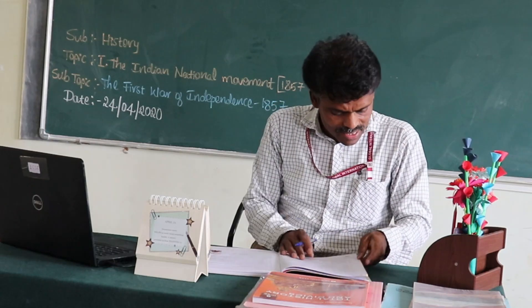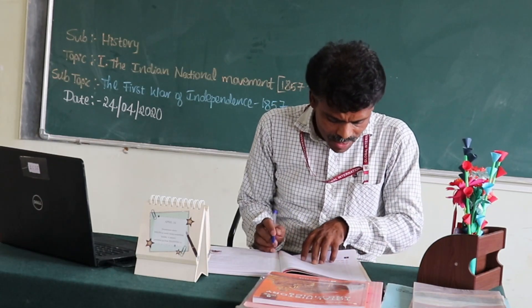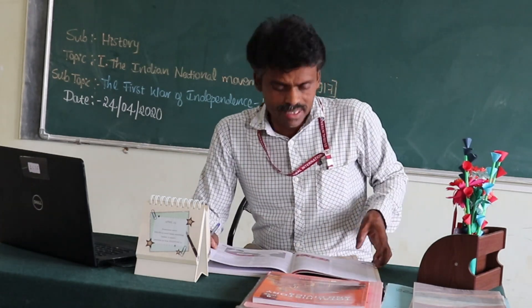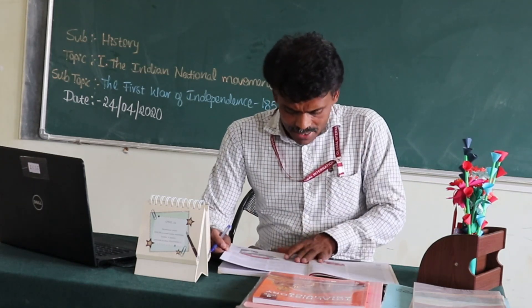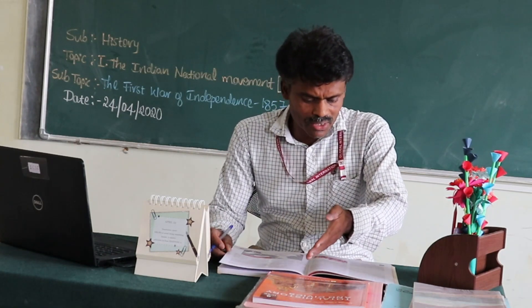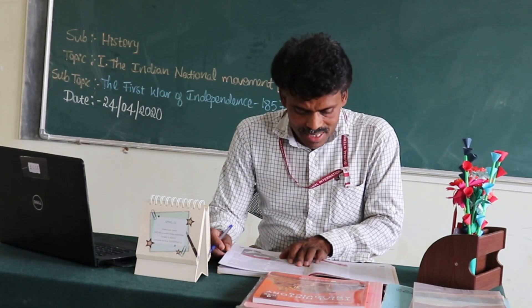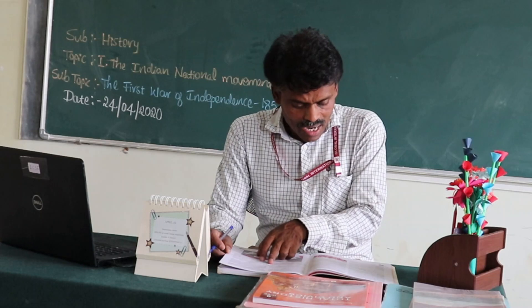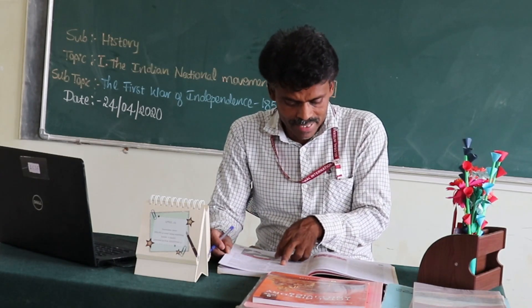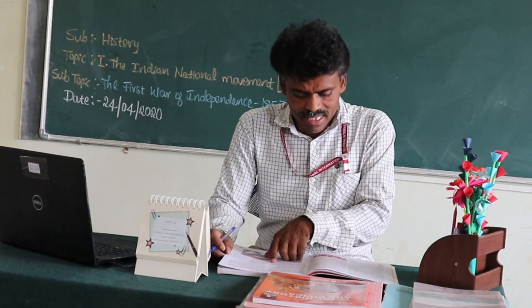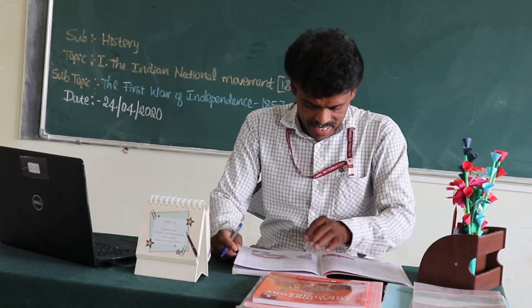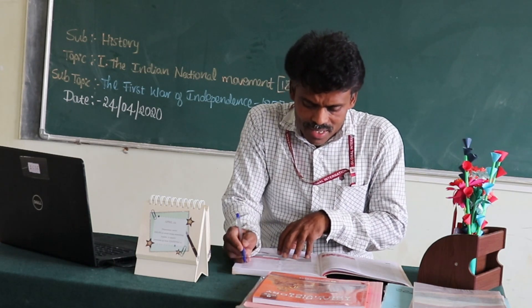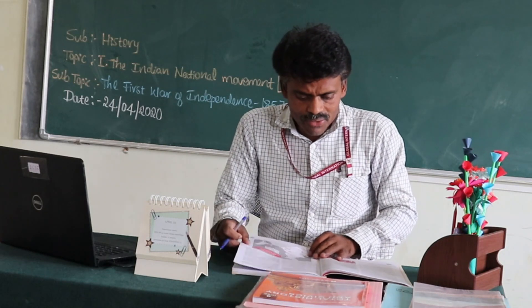The twenty-third question: Mention any two grievances harbored by the Indian soldiers which created an atmosphere favorable to the First War of Independence. Come to page number 15, extreme left side, serial number 4 — Bleak Prospects of Promotion. Start with 'All higher positions in employment' and mark six lines ending with 'Subedar.' Then add from the extreme right side, second line: 'They were required to serve in areas...' ending with 'allowances' — three more lines. Combine both paragraphs.